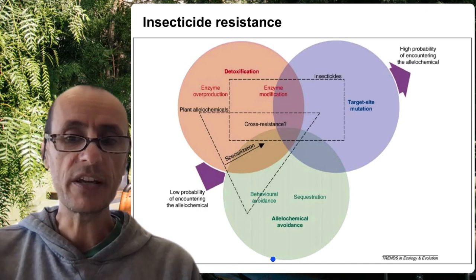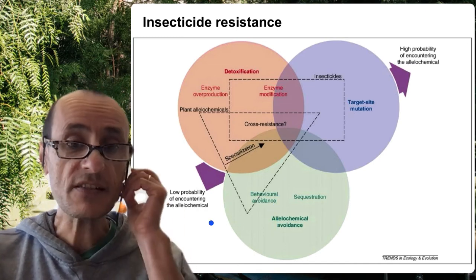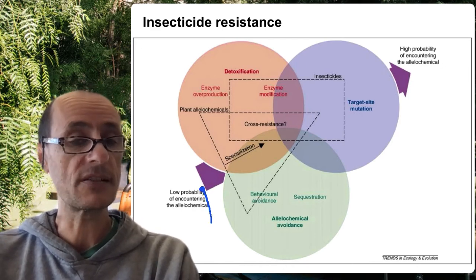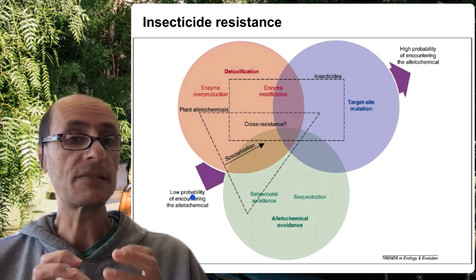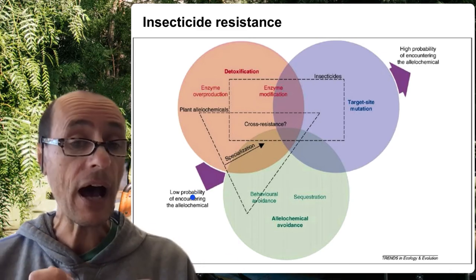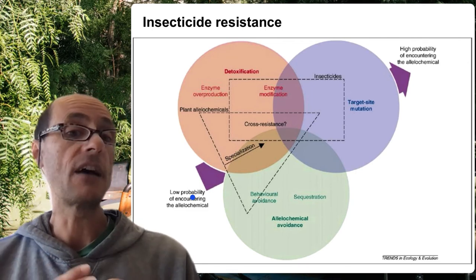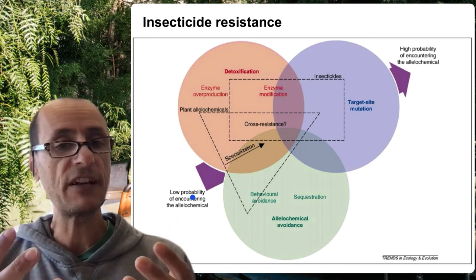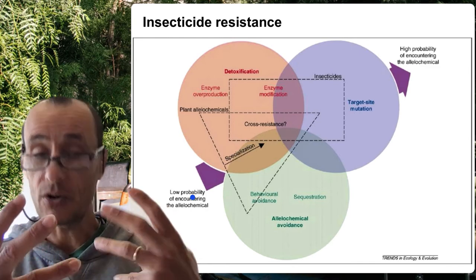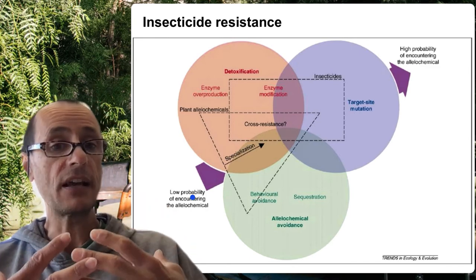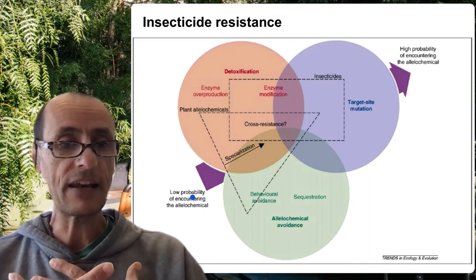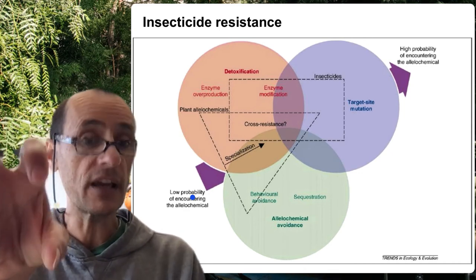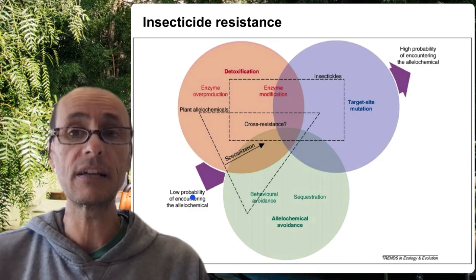The basic story here with insecticide resistance actually mirrors very closely what we see with insecticide resistance as well. You can think of insecticides as human-manufactured or sometimes plant-derived compounds that act on the physiology of the insect to kill or disable them. Just like insects feeding on plants, insecticides have to be encountered by the insect — through the cuticle or through the gut — and then have to find their way to the target where they will have these negative effects.